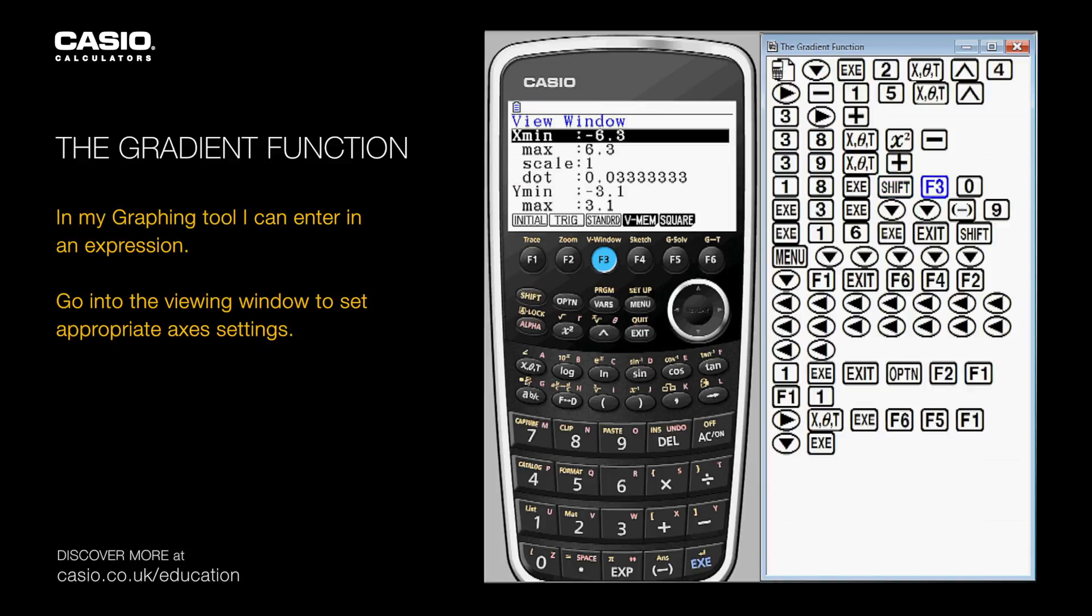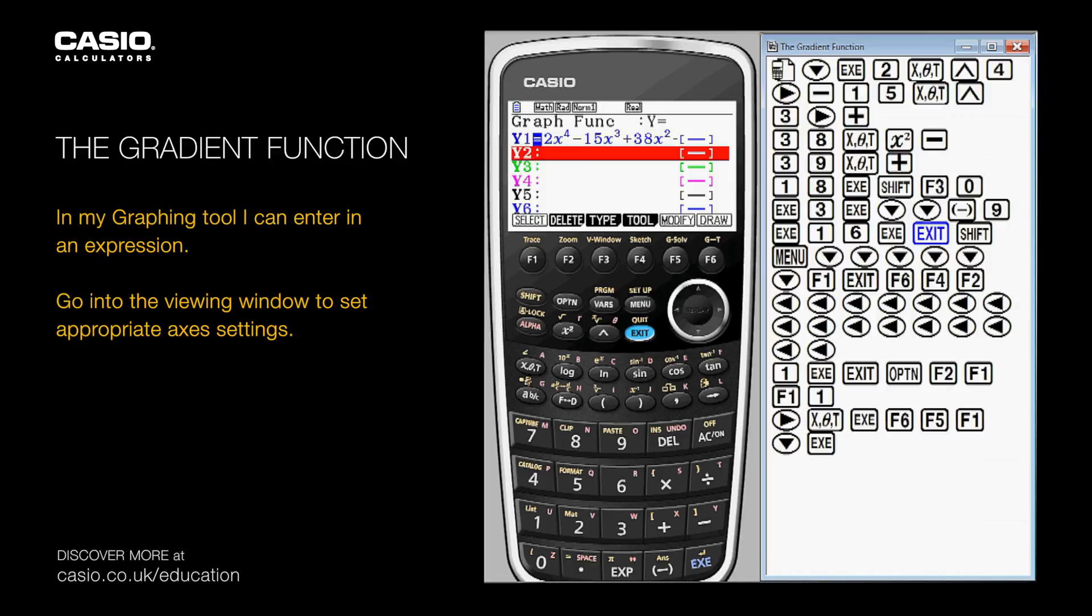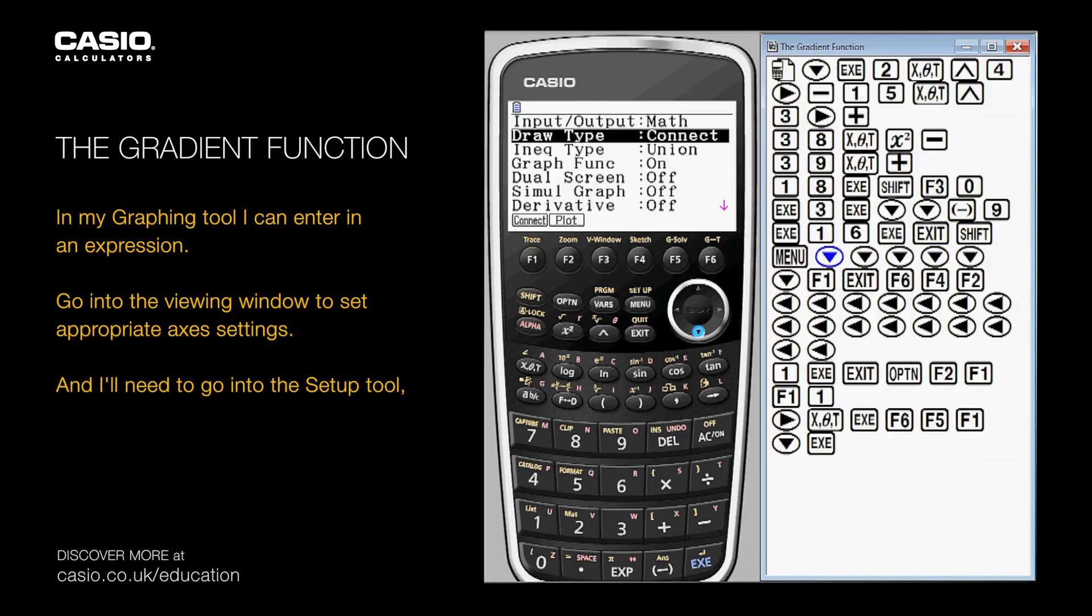Go into the viewing window to set appropriate axis settings, and I'll need to go into the setup tool to change derivative from off to on.